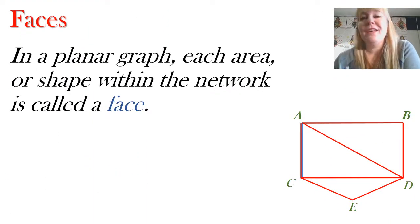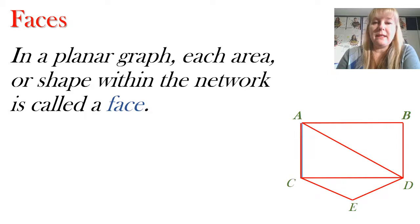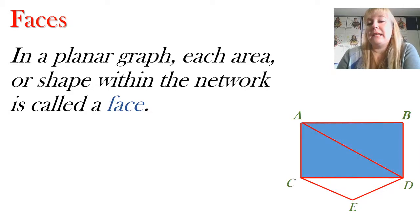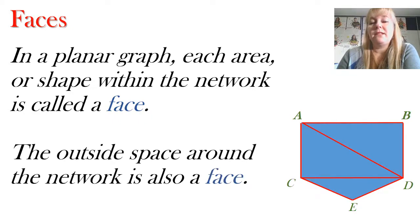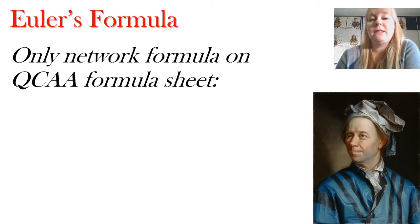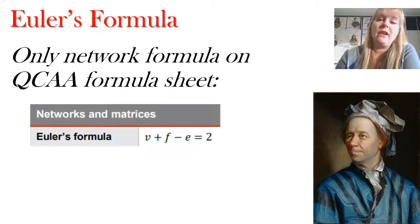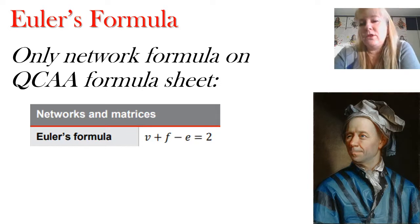In a planar graph we have different areas called faces. In these connected graphs we've got spaces called faces — basically all of the shapes made within a network. In this particular network I've got three different triangles, and the space around the outside is also a face, giving me four faces total. Euler was a very eminent mathematician and scientist from the 1700s from Switzerland, and he developed a formula about the relationship between edges, vertices, and faces. This is your only network formula on the QCAA formula sheet, so you don't have to remember it — it's Euler's formula.